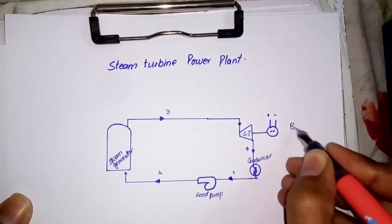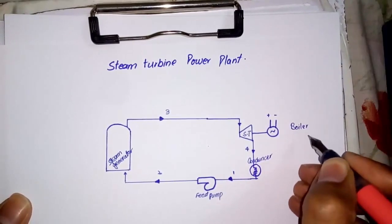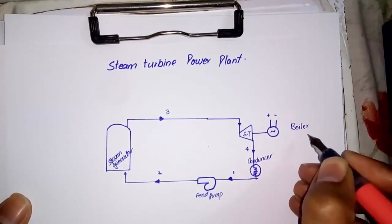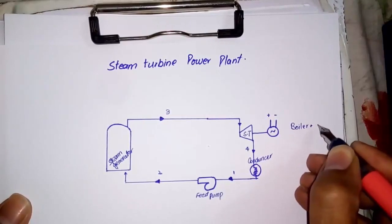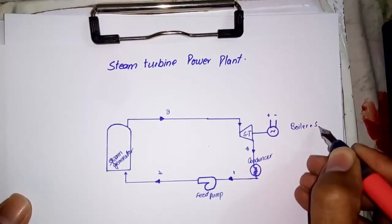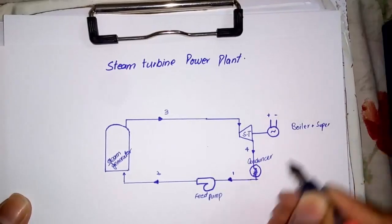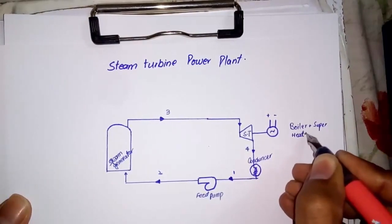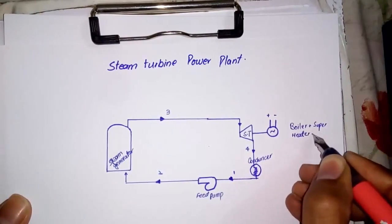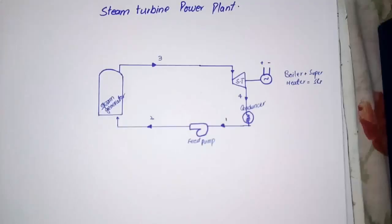The liquid again goes to the steam generator through the feed pump and the cycle goes on. Keep in mind that the steam generator is not just a boiler; rather, boiler plus superheater makes a steam generator. The boiler is responsible for the conversion of water into steam, but this steam is not 100% dry. After that, it is the superheater's job to make it dry by providing it more heat.